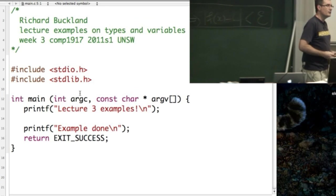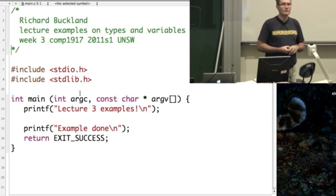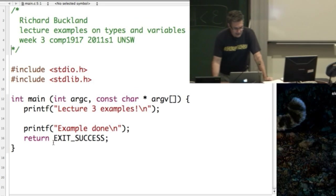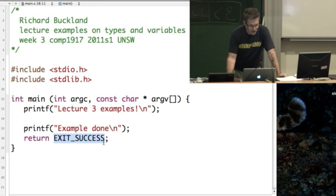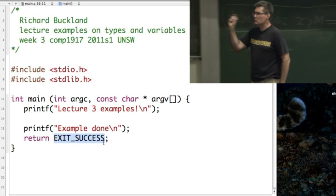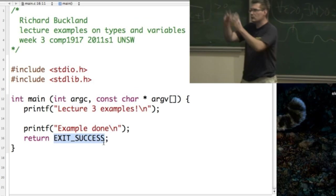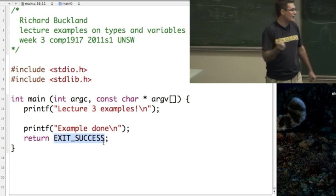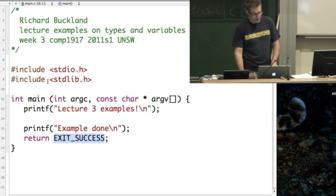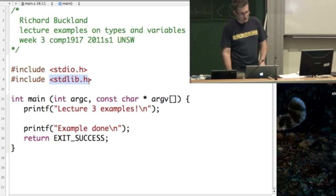Does anyone remember why we're including stdlib, by the way? What are we using out of stdlib? Exit success. This here is returning exit success, which is literally, by the preprocessor, that's going to be converted into a number. It's going to change the actual source code before it's compiled. It's going to convert exit success into a number because there's a hash define, hash defining exit success to be some number in stdlib.h.